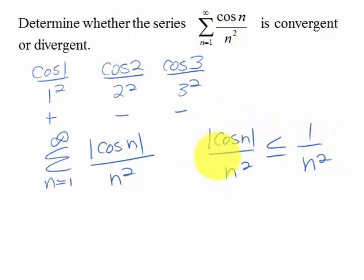of the series we're looking at are less than or equal to this, by the comparison test, this series is convergent, and therefore we have absolute convergence.